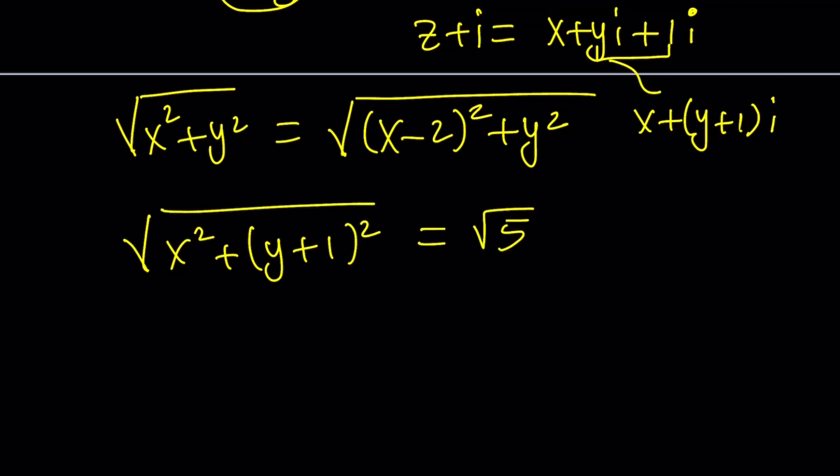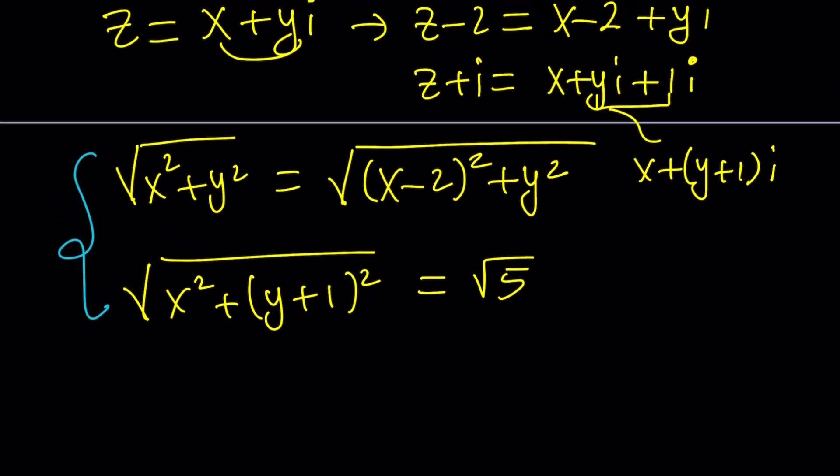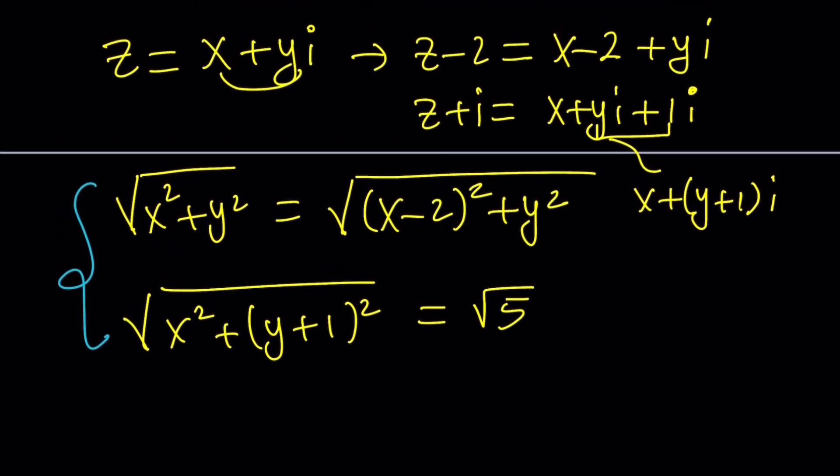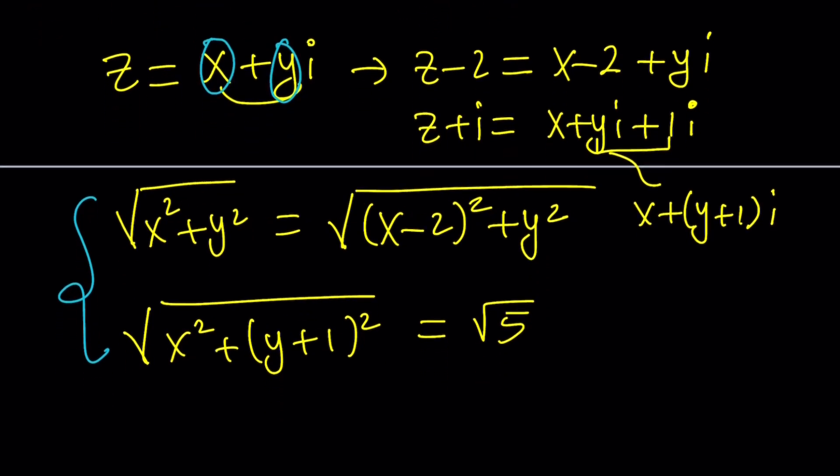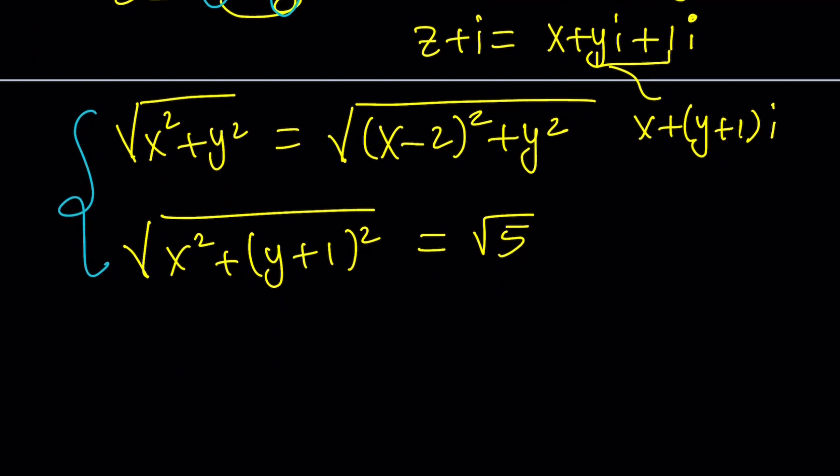So we got ourselves a good system in two variables, and they are real. Remember, if z is a complex number, x and y are defined to be real, and i is imaginary. Let's go ahead and see how we can solve this, and I'm going to show you a graph which explains the situation.